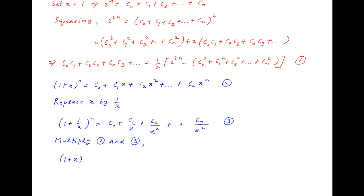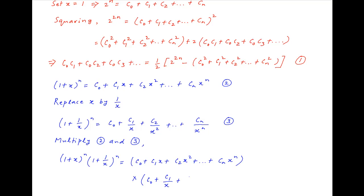On the left hand side we get (1 + x)^n times (1 + 1/x)^n. On the right hand side we get (C0 + C1·x + C2·x² + ... + Cn·x^n) multiplied by (C0 + C1/x + C2/x² + ... + Cn/x^n).